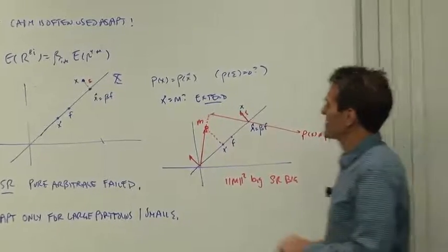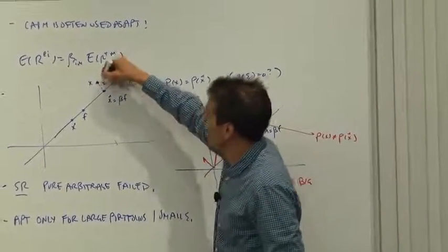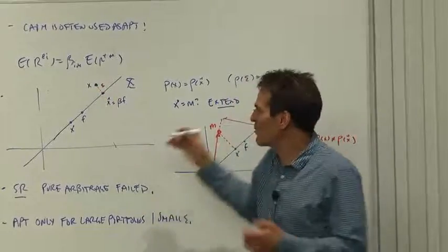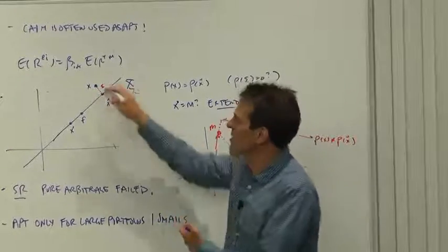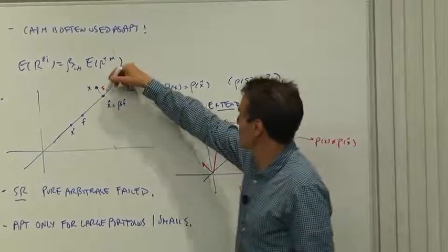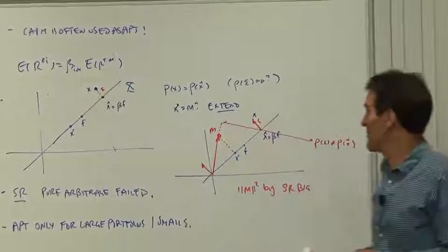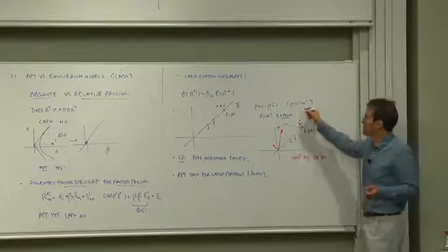So the APT philosophy says, look, x is pretty close here. Epsilon's pretty small. What price can we assign to this? How can we extend the prices we know to the prices of something we don't know? If epsilon's small, why don't we just use the price of x hat as the price of x? And that's going to be a pretty good approximation.